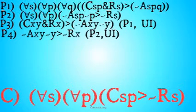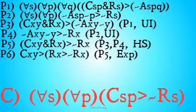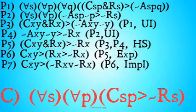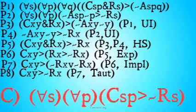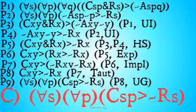We apply universal instantiation to premise two: it's not the case that X would alter their belief that Y given not-Y implies that X is not rational, instantiating S as X and P as Y. A hypothetical syllogism connects these to get: X is certain that Y and X is rational implies it's not the case that X is rational. Exportation gives us: X is certain that Y implies that X is rational implies X is not rational. By implication and tautology, we get: X is certain that Y implies it's not the case that X is rational. We universally generalize back to all S and all P to reach our conclusion.